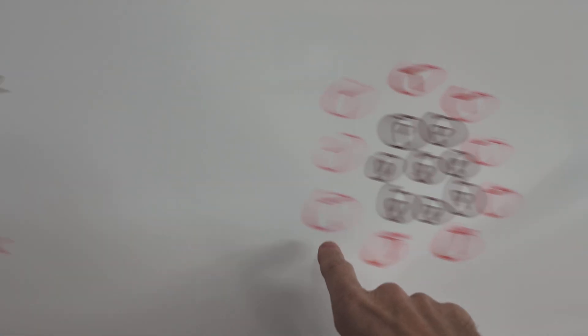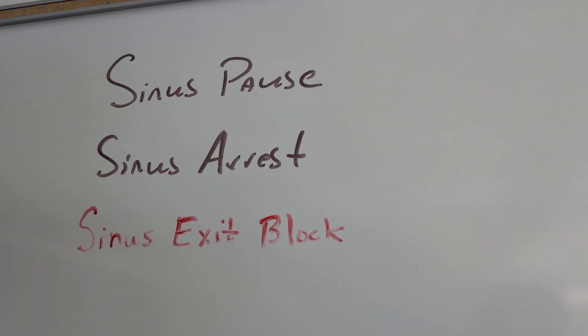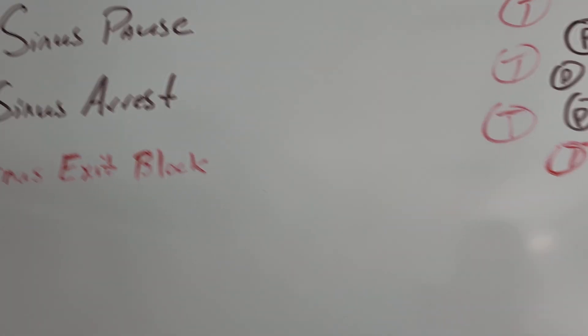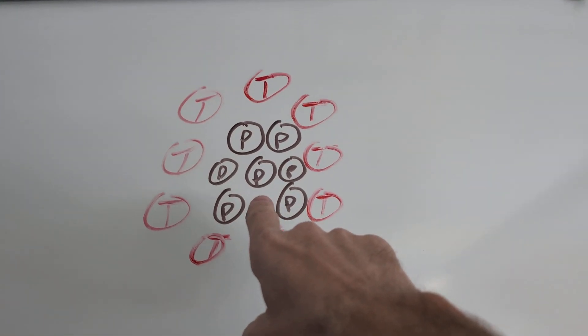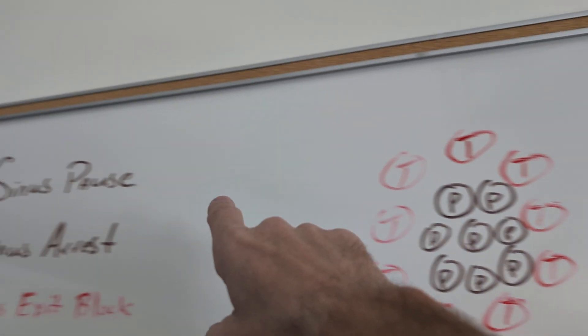Now, how can we differentiate between these problems on the ECG? Well, it's actually fairly straightforward. If you have failure of the P cells to fire, you're going to get a sinus pause.